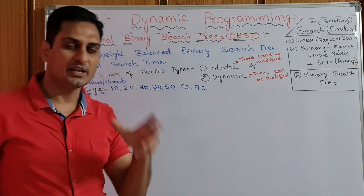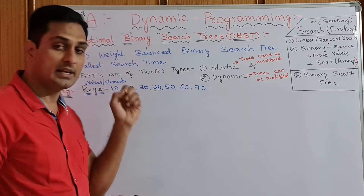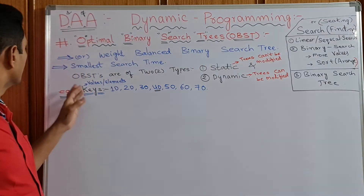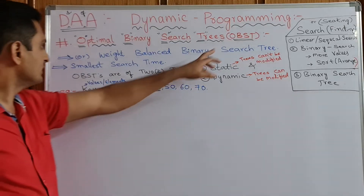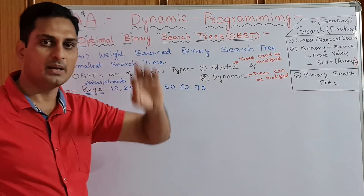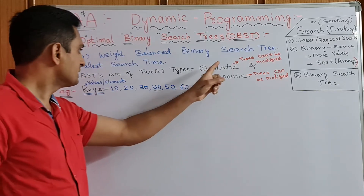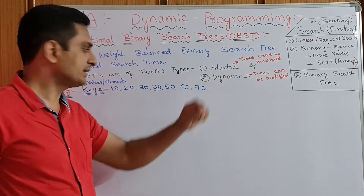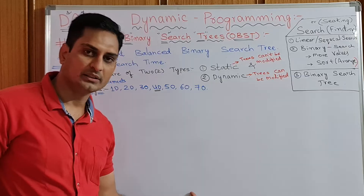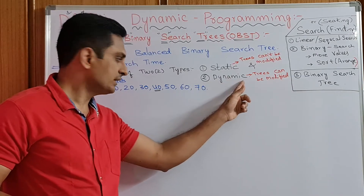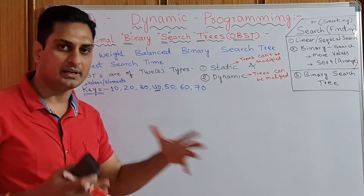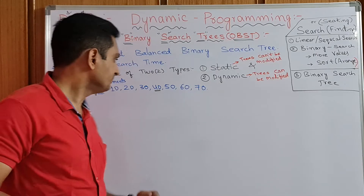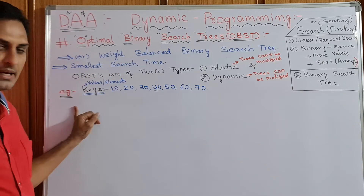This is also called a weight balanced tree. When I draw the diagram, we'll come to know why. It takes very small search time when finding an element — that's why it is called optimal binary search tree. OBST is of two types: one is static optimal binary search tree, where the tree cannot be modified once drawn; and the second is dynamic optimal binary search tree, where we can modify the tree by rotation.